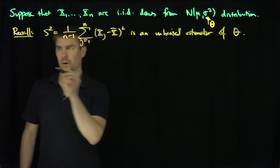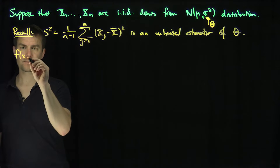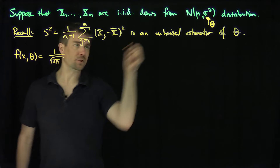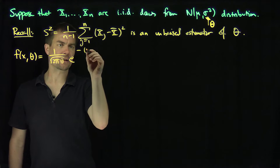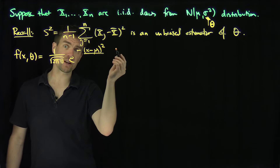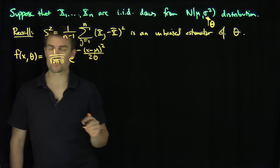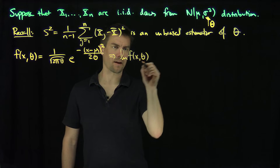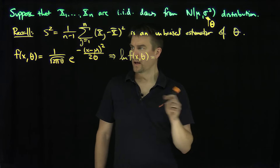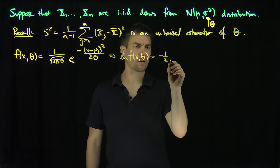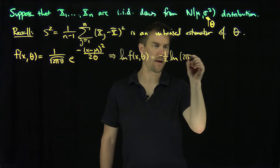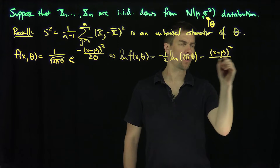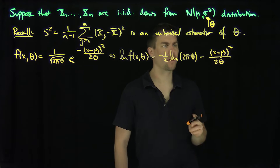So now I want to give you the information. Our density f(x; θ) is 1 over √(2πθ) times e to the negative (x−μ)² over 2θ. So the log of f(x; θ) equals negative ½ log(2πθ) minus (x−μ)² over 2θ.